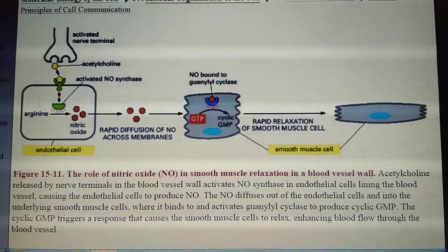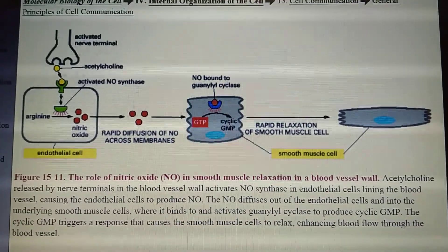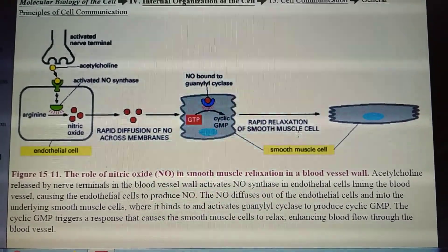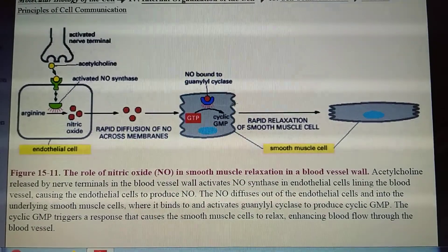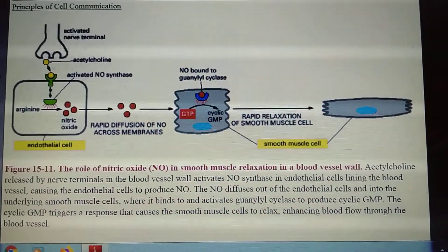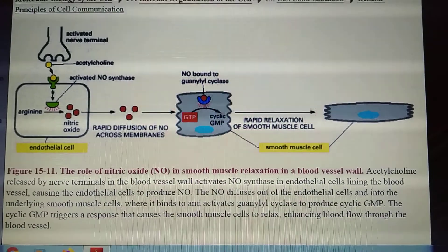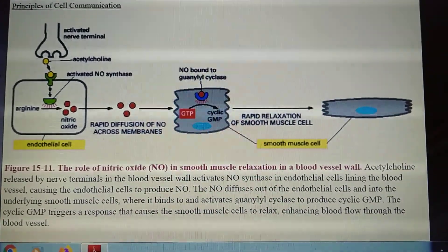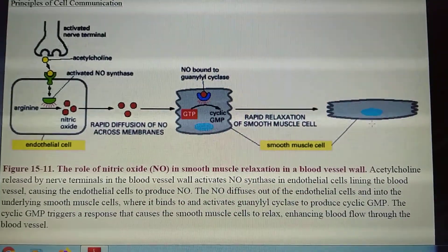The rapid increase of cyclic GMP causes smooth muscle cell relaxation. This is the contracted form of the smooth muscle cell, and this is the relaxed form. In this way, the nitric oxide cell signaling pathway causes rapid relaxation of smooth muscle cells.